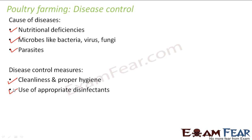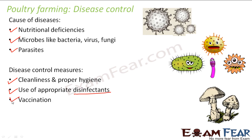Control measures include cleanliness and proper hygiene, which should be maintained in all types of animal husbandry — cattle farming, poultry farming, fish production, and bee keeping. Appropriate disinfectants, such as Dettol or Savlon, should be used to eliminate infection. Vaccination is also important; vaccines available for common poultry diseases should be given on time.